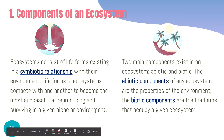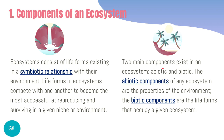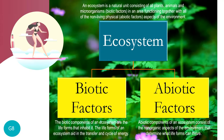Ecosystems consist of living organisms existing in a symbiotic relationship with their environment — that's an interconnected relationship that's usually mutually beneficial to both parties. Life forms in ecosystems compete with one another to become the most successful at reproducing and surviving in a given niche or ecological role. The two main components that exist in an ecosystem are its abiotic and biotic factors — abiotic being the non-living physical properties, and biotic being the living organisms.